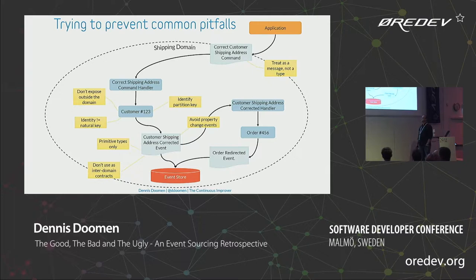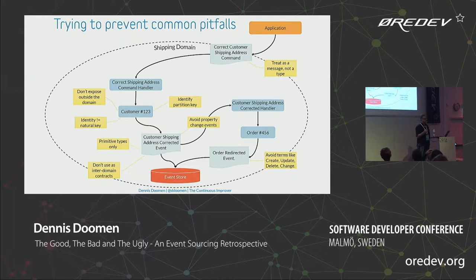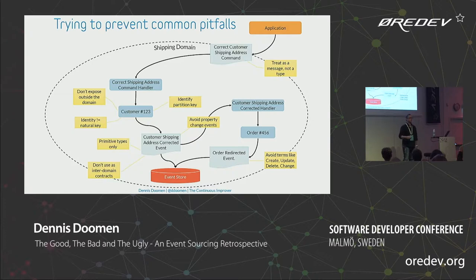Try not to use words like create, update, delete, and change in event names. Business users don't talk that way and it doesn't capture anything. As soon as you see a pull request adding an event called 'create user,' ask: what does that mean? Did the user enroll? Understanding the higher-level business meaning gives you a better understanding of what happened in the domain.